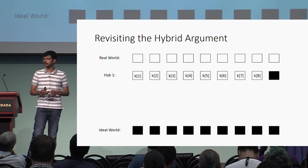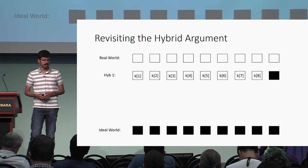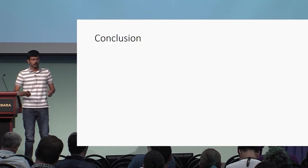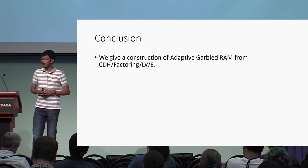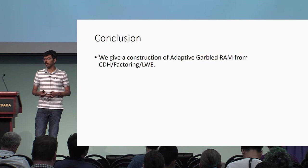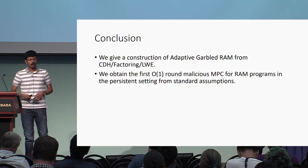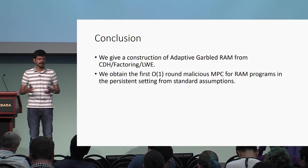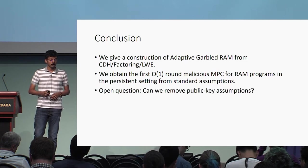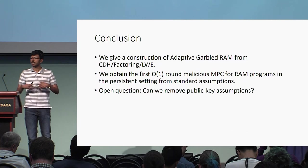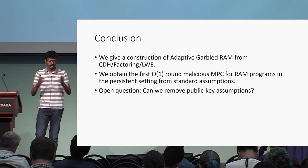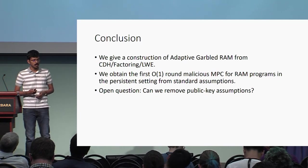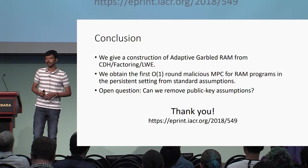To protect the access pattern, we need a specialized ORAM scheme, and I wouldn't have time to go into the details — I encourage you to look into our paper. To conclude, we gave a construction of adaptive garbled RAM from standard assumptions such as CDH, factoring, or learning with errors. As a consequence, we also obtained the first constant-round malicious MPC for RAM programs in the persistent setting from standard assumptions. A major open problem is whether we can remove public key assumptions: in the selective setting we know constructions from one-way functions, but in the adaptive setting we seem to require public key assumptions. Thank you for your attention.